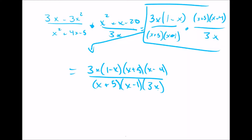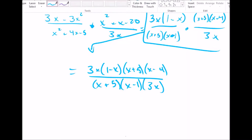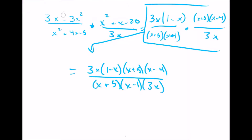At this point, we're just looking for things we can cancel out. x plus 5 is on the top and the bottom, so I'm going to cancel those out. 3x is on the top and the bottom, so I'm going to cancel those out. Now we're left with 1 minus x and x minus 4 on the top, and x minus 1 on the bottom. In most situations you won't have to do this, but this is a special case — this is why I'm showing it to you.